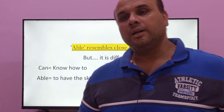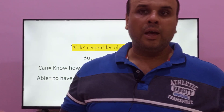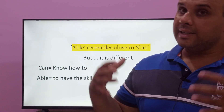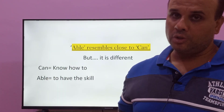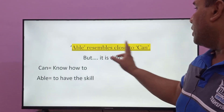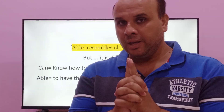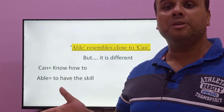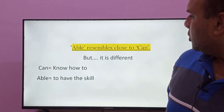For example, if I say 'I can swim,' the meaning is that I know how to swim. But if I say 'I am able to swim,' the word 'able' suggests a skill — it sounds as if I am speaking specifically about my skill of swimming. So 'able' and 'can' can be similar in meaning, but there is a difference in interpretation which I will explain further.